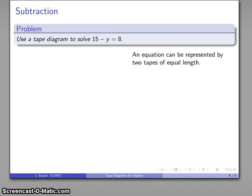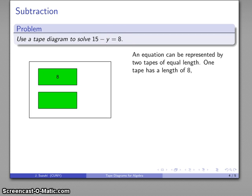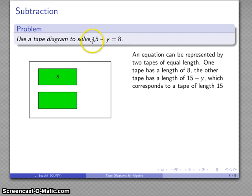So let's go ahead and think about this as our tape diagram. So again, an equation can be represented by two tapes of equal length. And one of those tapes has length 8. And the other tape is going to correspond to 15 minus y.